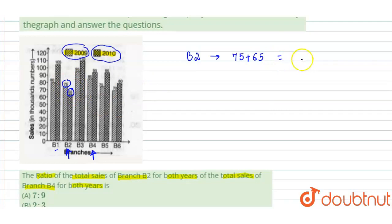For B4, we add sales: 85 plus 95, which gives us 180 thousands.